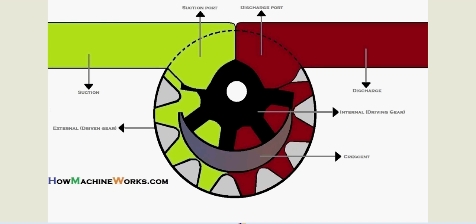we see, that's our crescent, and that's a part of the body itself. It's not rotating. Its function is to separate the internal gear from the external gear. And also, as it rotates in the suction, the oil has been taken and has been